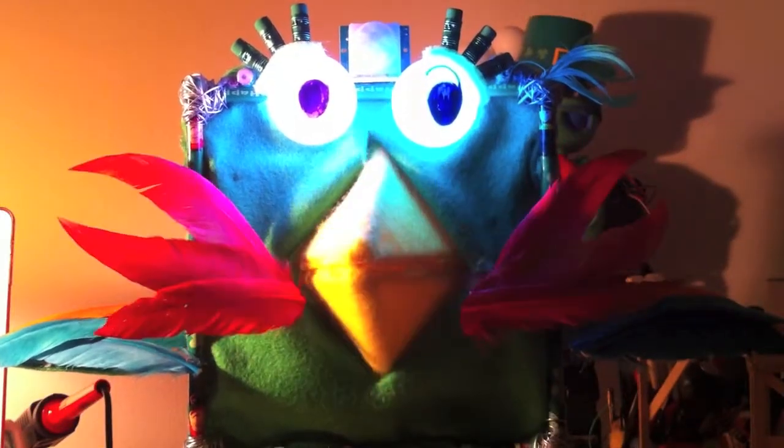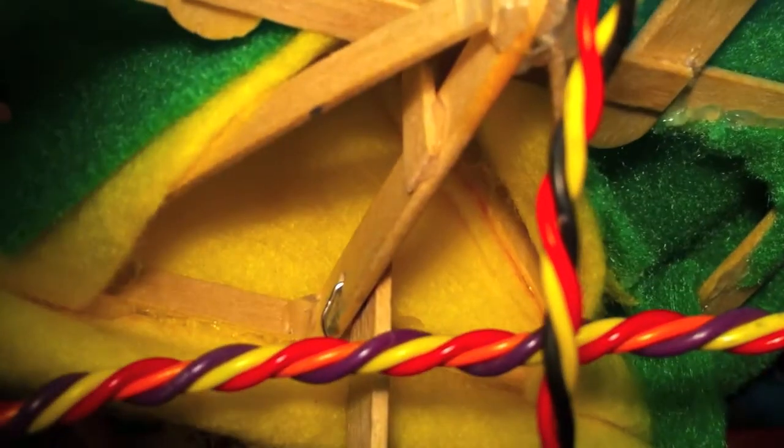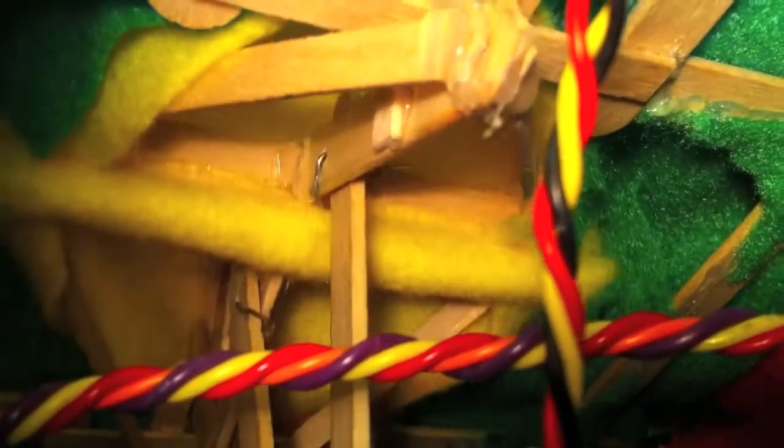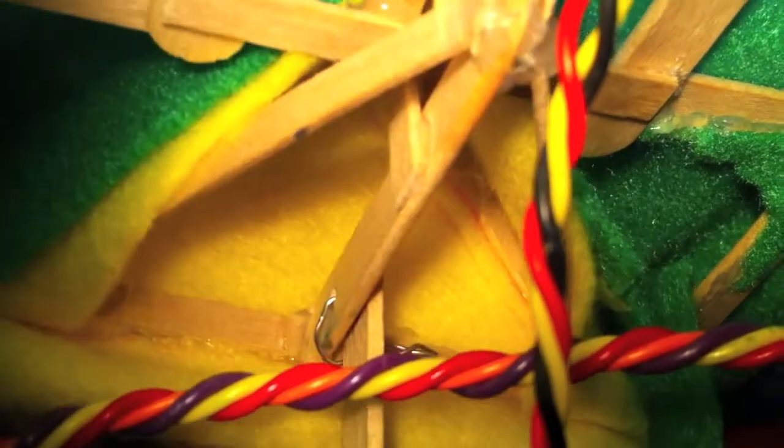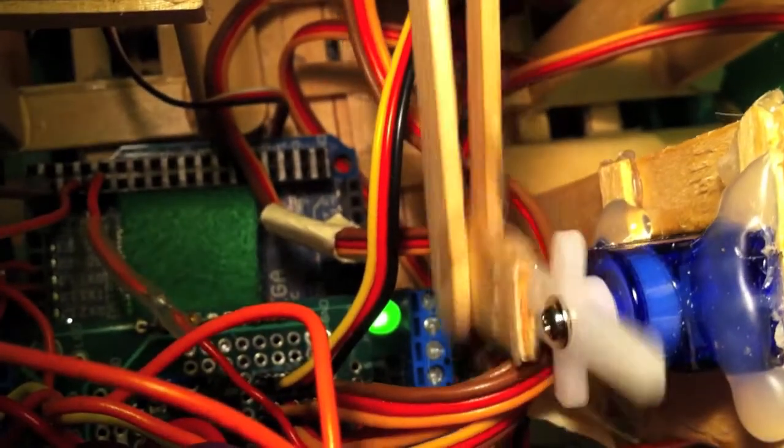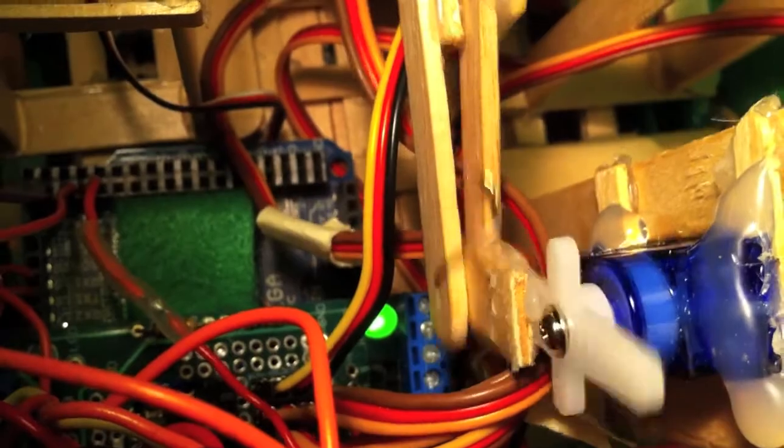Instead of using two servos to control each half of the beak separately, we use only one servo with a mechanism. The mechanism uses popsicle sticks with holes in it to change the rotational movement of the servo into linear movement to push the beak open.